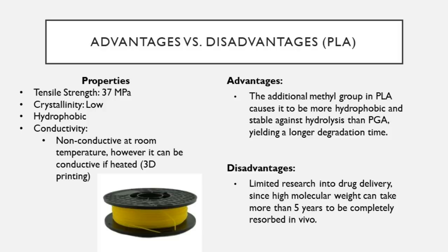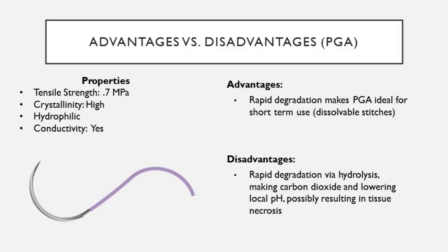On the opposite end, PGA has almost opposite properties to PLA. Its tensile strength is much lower — around 0.7 MPa. It has high crystallinity, is conductive even at room temperature, and is hydrophilic. The advantage is rapid degradation, making it ideal for short-term uses like dissolvable stitches, which don't require high tensile strength. However, degradation can be so rapid that bulk hydrolysis of a large implant produces carbon dioxide and acidic byproducts that lower pH, resulting in tissue inflammation or possibly even necrosis.